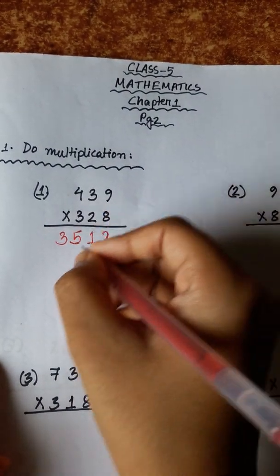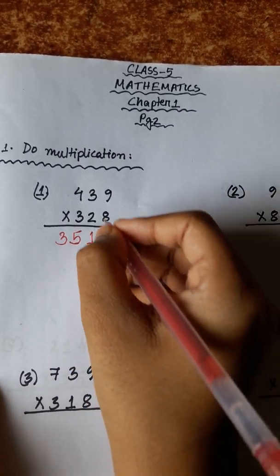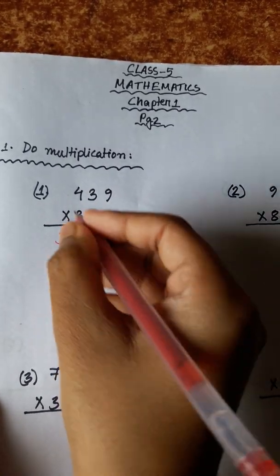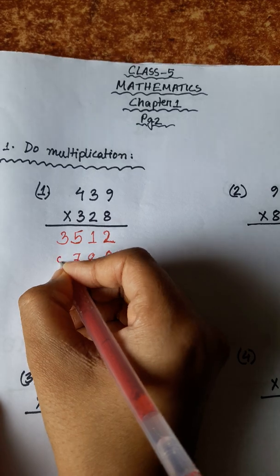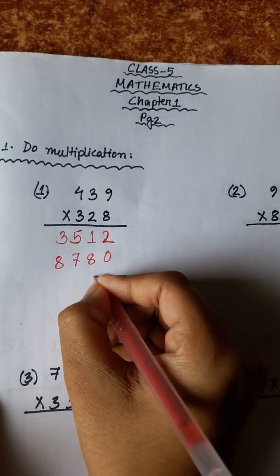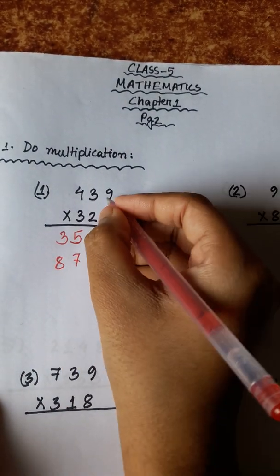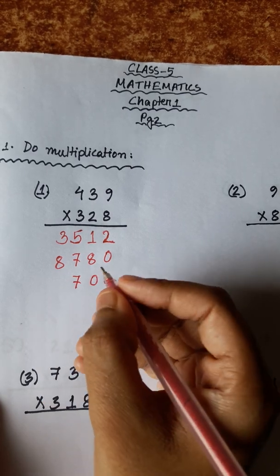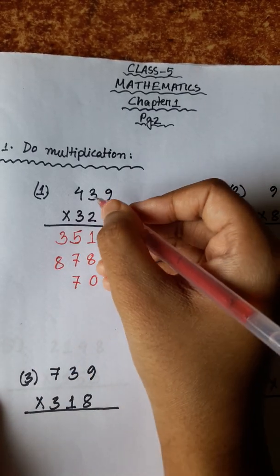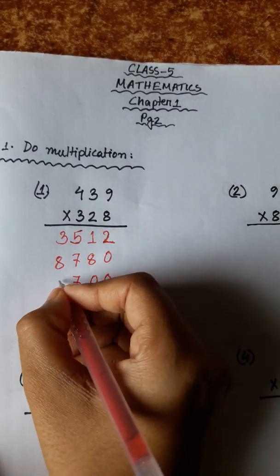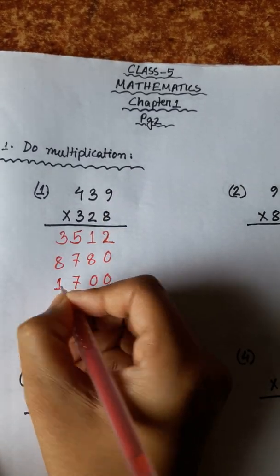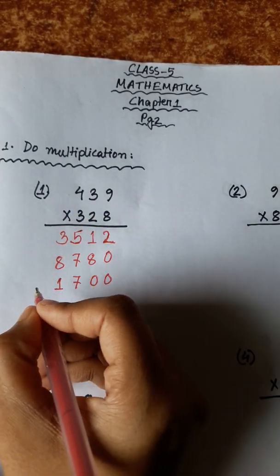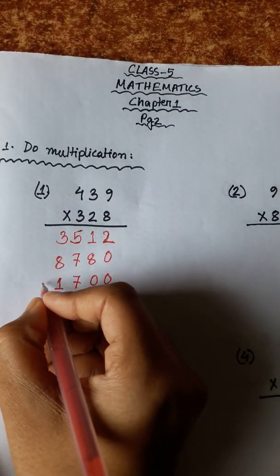9 twos are 18, carry 1. 3 twos are 6, plus 1 is 7. 4 twos are 8. 9 threes are 27, carry 2. 3 threes are 9, plus 2 is 11, carry 1. 4 threes are 12, plus 1 is 13.